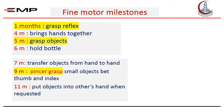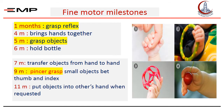From the fine motor milestones, I'd like to focus on grasp. At birth, grasp is a neonatal reflex that is lost at the age of five months. Then the whole hand grasp appears, which is the ability to hold objects with the whole hand. This will be more advanced at the age of nine months to pincer grasp, which is holding objects between the thumb and the other fingers, as you can see in this photo.